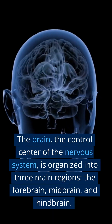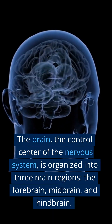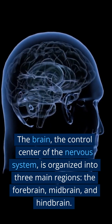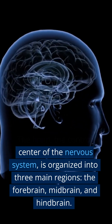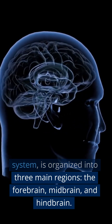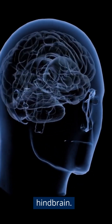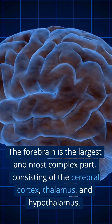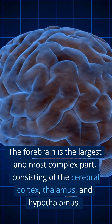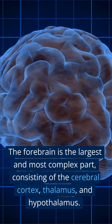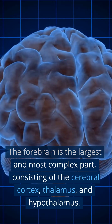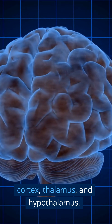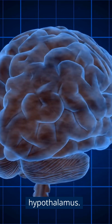The brain, the control center of the nervous system, is organized into three main regions: the forebrain, midbrain, and hindbrain. The forebrain is the largest and most complex part, consisting of the cerebral cortex, thalamus, and hypothalamus.